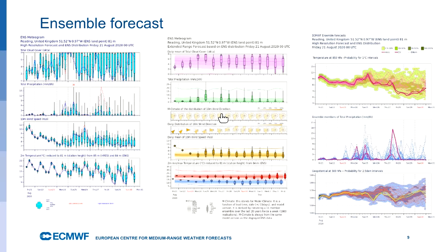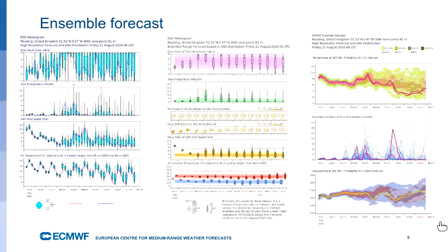On the right-hand side are the plumes, which show the ensemble in a slightly different way. You can see in the top we have the temperature at 850 hectopascals; in the middle, the rainfall; and at the bottom, the geopotential height at 500 hectopascals. These show how the model is evolving with time and help identify particular patterns coming out. You can see that even from last Friday's forecast there was quite a good indication of a chance of quite significant rainfall on Tuesday, associated with storm conditions.